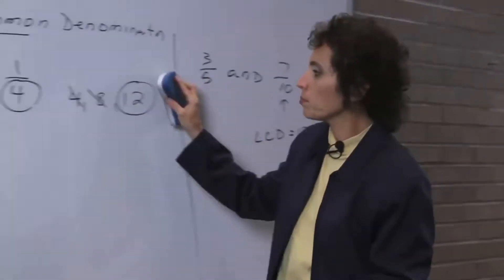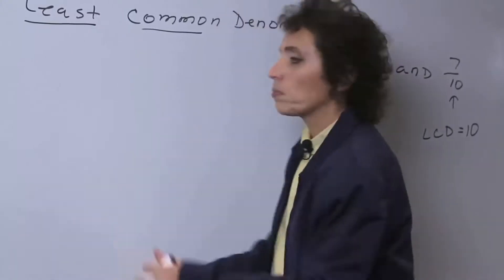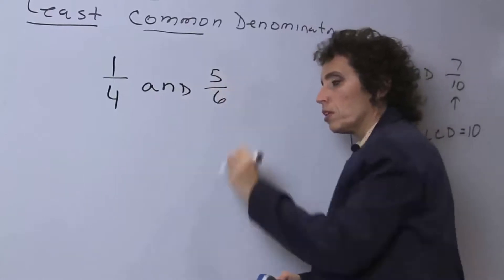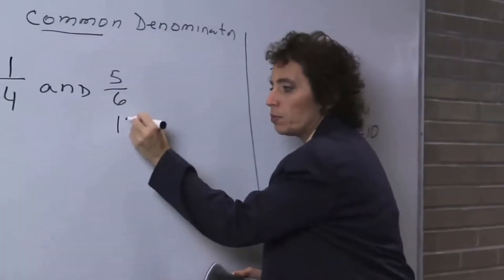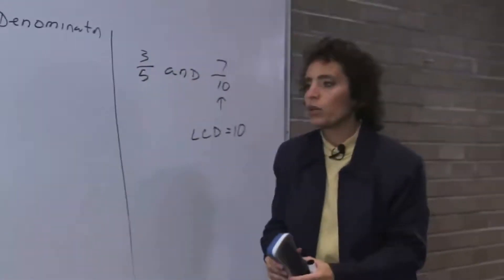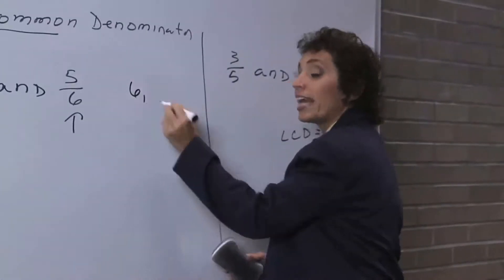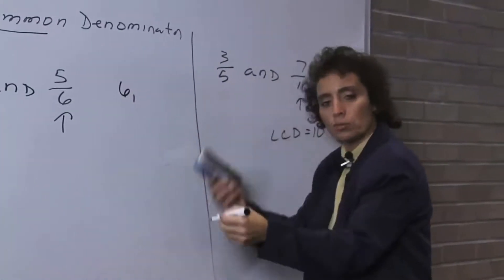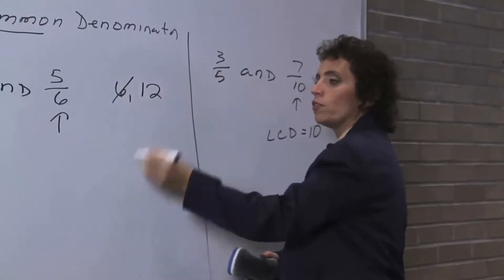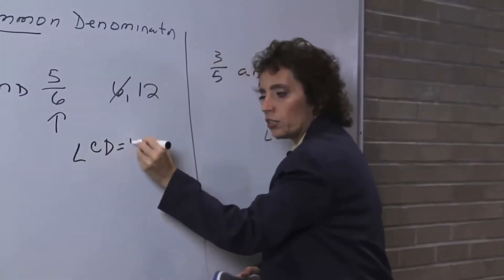Let's try the next one: 1 fourth and 5 sixths. Again, I look at the bigger number — does 4 divide into 6 without a remainder? The answer is no. So I start taking the multiples of 6. 6 times 1 is 6 — doesn't work. 6 times 2 is 12 — does 4 go into 12? The answer is yes. So the LCD is 12.